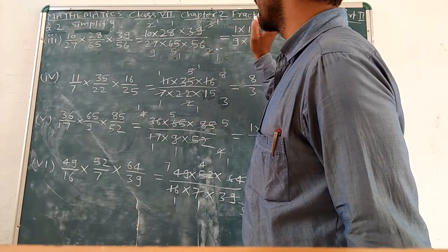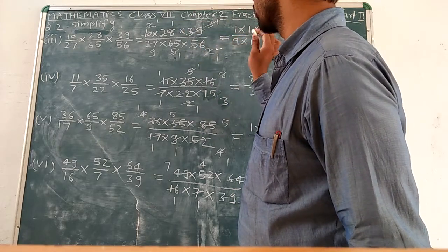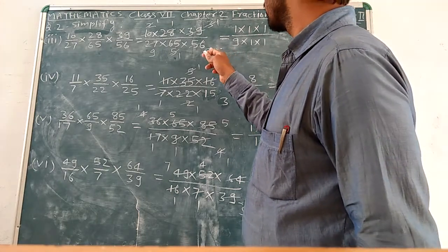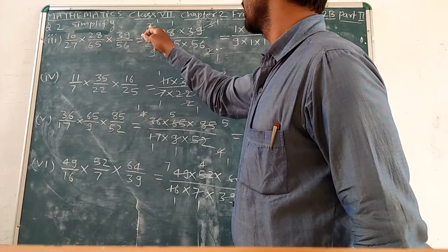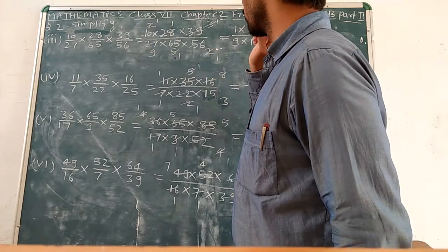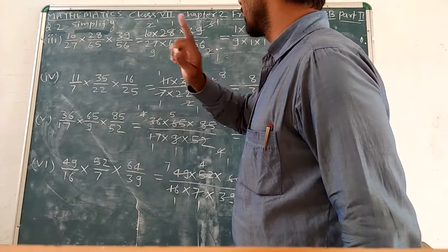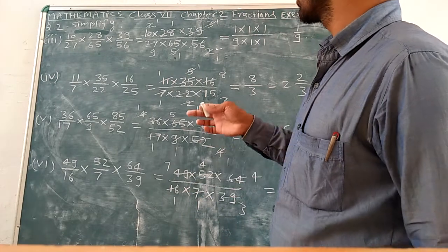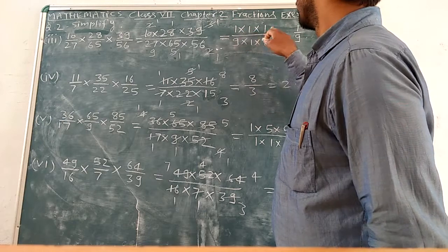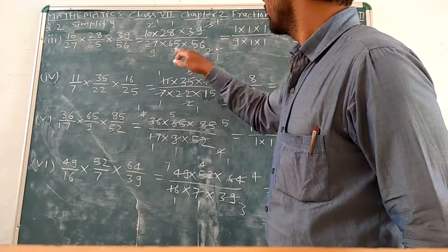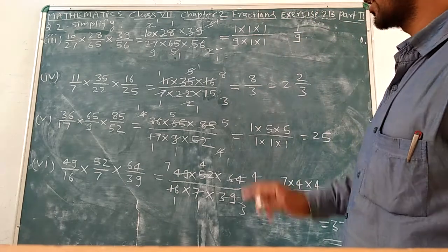28, 256. Here is 1 multiplied and 1 is 1 by 1 multiplied 1, 1 upon 9.